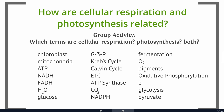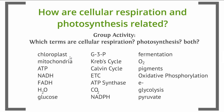Let's just go through this list. A chloroplast is going to be a part of photosynthesis. Mitochondria is going to be a part of cellular respiration. ATP is something we find in both cellular respiration and photosynthesis. NADH and FADH are the taxicab energy carrier molecules found in cellular respiration.